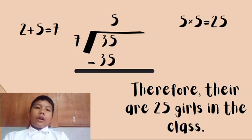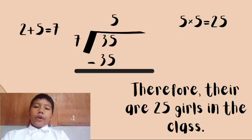Step 3, multiply the value of one part by each term in the ratio to find the value of each share. So 5 times 5 is equal to 25. Therefore, there are 25 girls in the class.